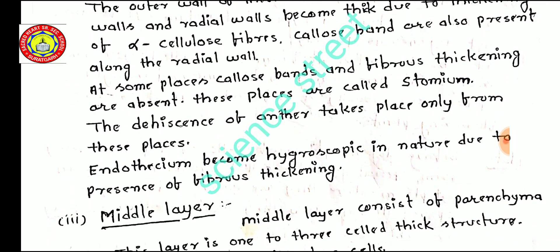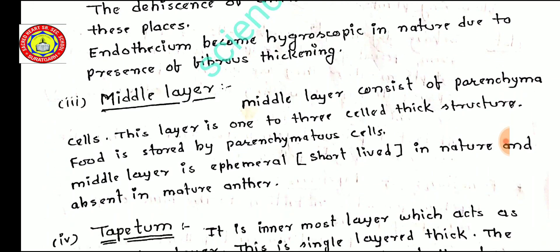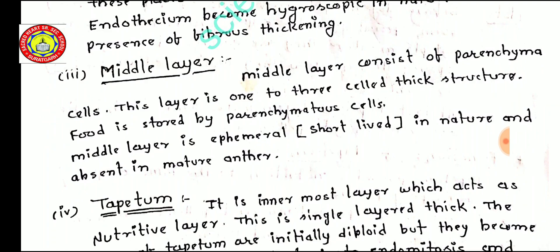The endothesium becomes hygroscopic in nature due to the presence of fibrous thickening — hygroscopic means it absorbs moisture from the environment. The third layer is the middle layer, which consists of parenchyma cells. This layer is one to several cells thick, and food is stored by the parenchyma cells.